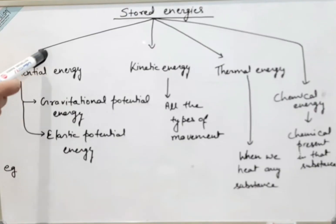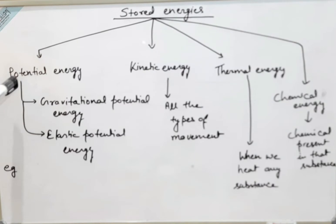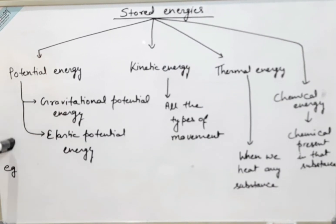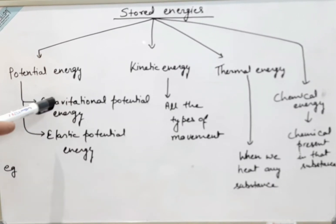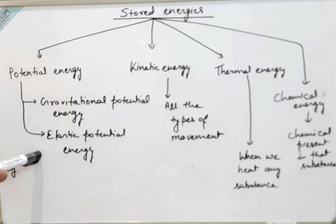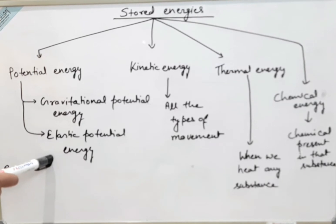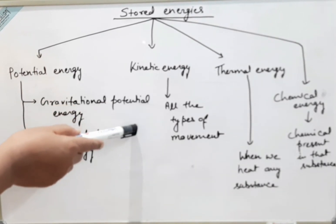These are four different types of stored energies. Potential energy can be stored in an object in two ways: when you take an object above the ground it stores gravitational potential energy, and when you stretch any elastic material it stores elastic potential energy.